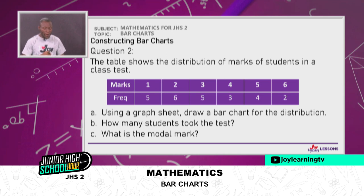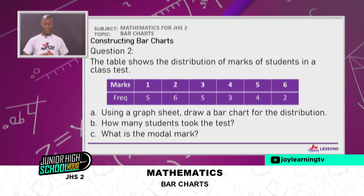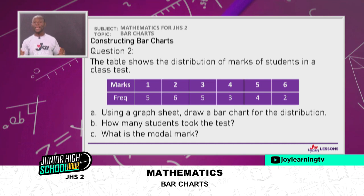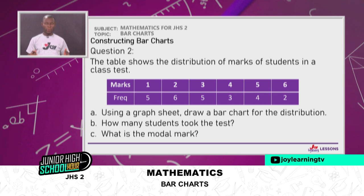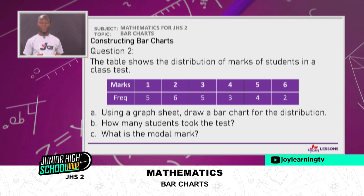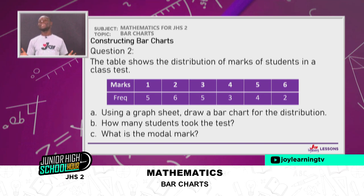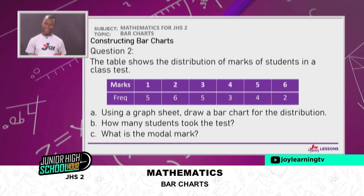Let's look at question two. 'The table shows the distribution of marks of students in a class test.' We have marks 1, 2, 3, 4, 5, and 6 with frequencies 5, 6, 5, 3, 4, and 2 respectively. Using the graph sheet, draw a bar chart for the distribution. Then we'll ask: how many students took the test, and what is the modal mark?